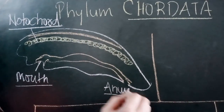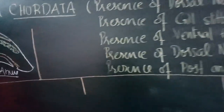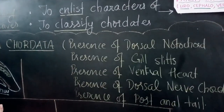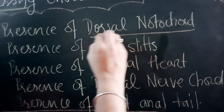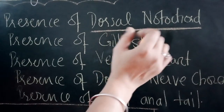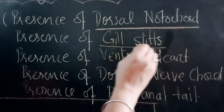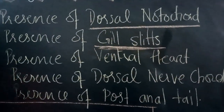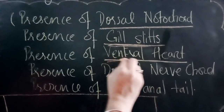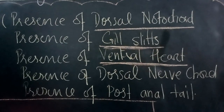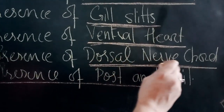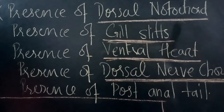The first objective is to enlist the characters of Phylum Chordata. First, there is the presence of a dorsal notochord — a vacuolated rod-like structure present on the dorsal side of chordates. Second, there is the presence of gill slits in the region of the pharynx, either in embryonic stages or in the adult. Third, the presence of a ventral heart — the heart is ventral in position. Fourth, the presence of the dorsal nerve chord; for example, the spinal cord in our body is present in the dorsal position, so we are chordates.